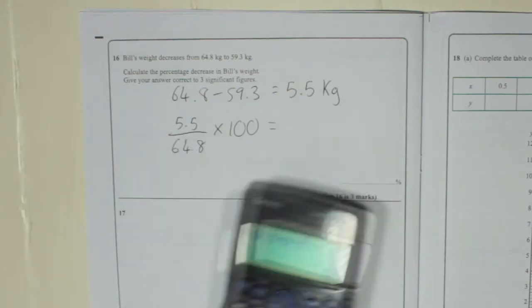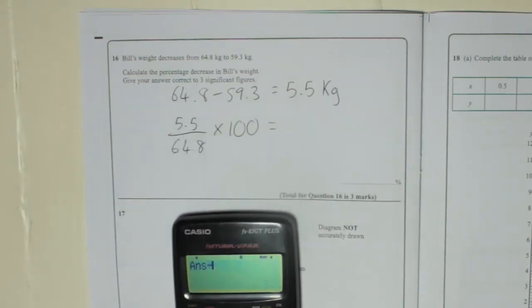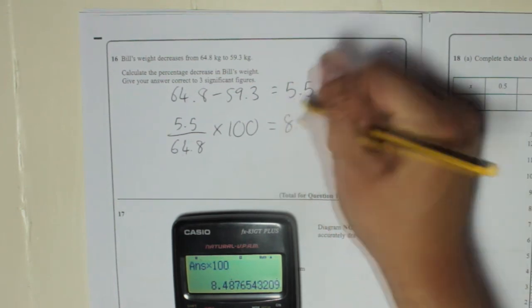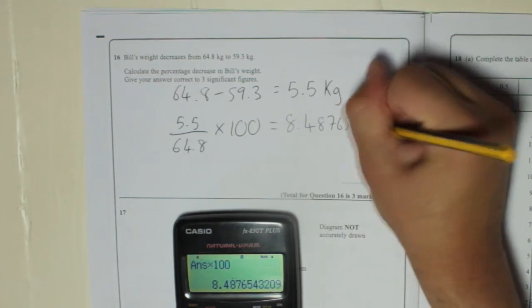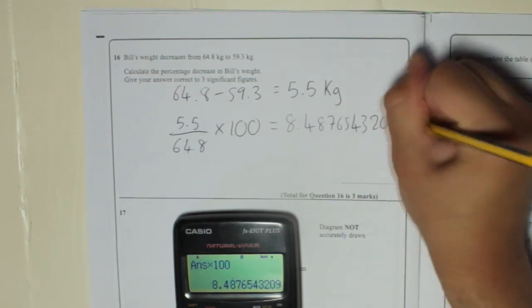So 5.5 is already in the calculator. We're going to divide it by 64.8. And then you're going to times it by 100. And we get 8.4876543209.